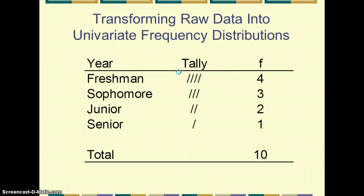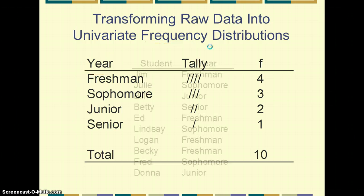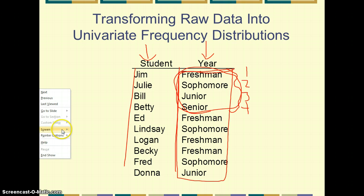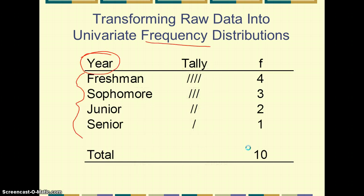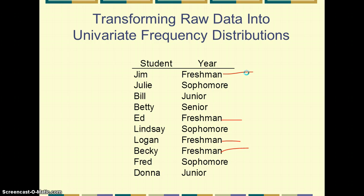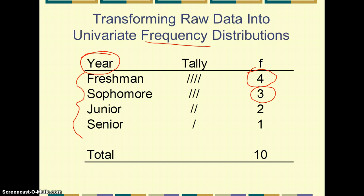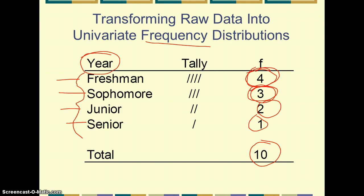We can transform that raw data into a univariate frequency distribution. The variable is year, and we simply count the frequency. There are four freshmen, three sophomores, two juniors, and one senior. So the total frequency — the total number of people in our data set — is 10. For each value of our variable, we have a frequency, which is simply how many times it occurs.